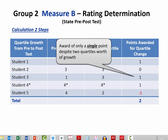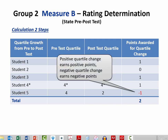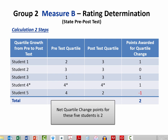Student 3 grew two quartiles; however, regardless of the number of quartiles grown, one point is assigned as the value. Student 4 is one of those students that started in the top quartile and ended in the top quartile — the teacher is given credit for keeping that student there, and one point is awarded. Finally, Student 5 experienced negative quartile growth; even though they dropped two quartiles, only one quartile point is deducted. So for these five students, the overall net quartile change value is 2.